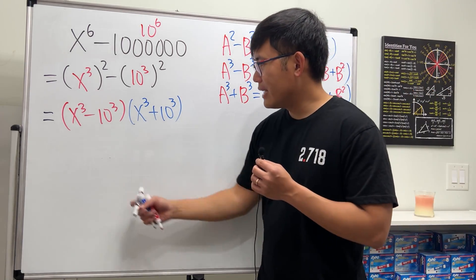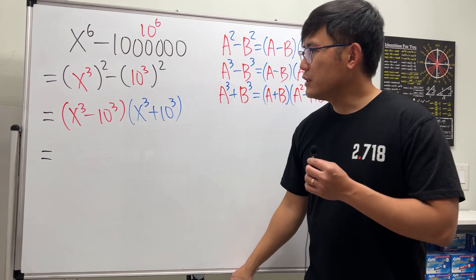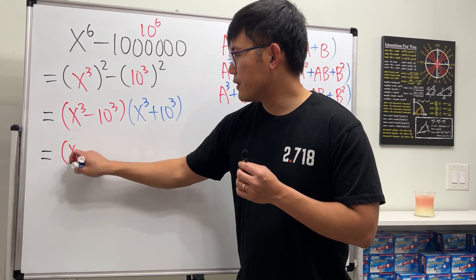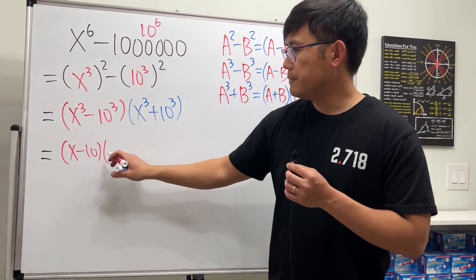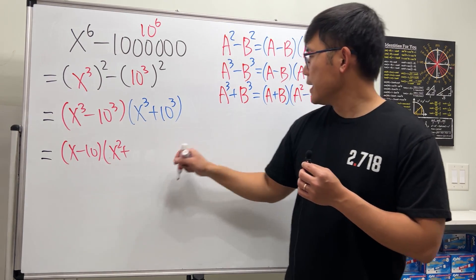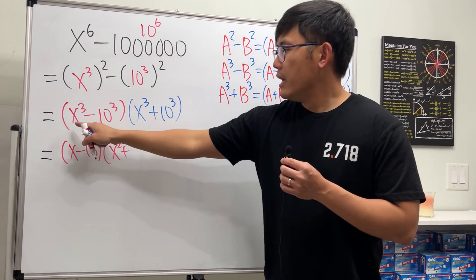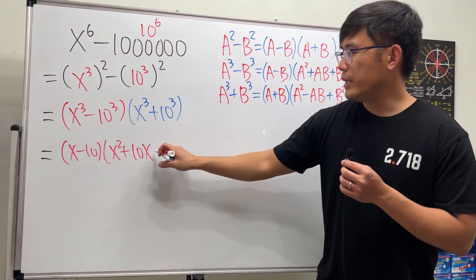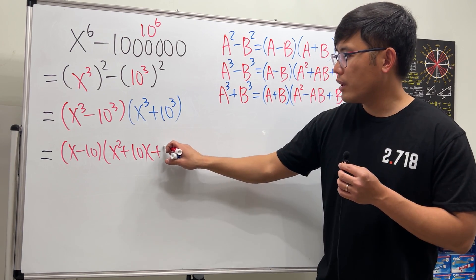So, let's go ahead and finish this. For the first one, we will just get x minus 10 for the first factor, times x squared plus ab, so x times 10, which is just 10x, and then we add b square, which is 10 square, and that's 100.